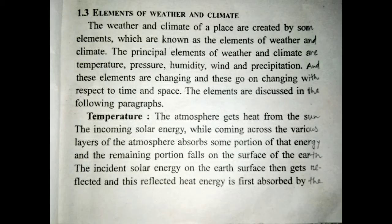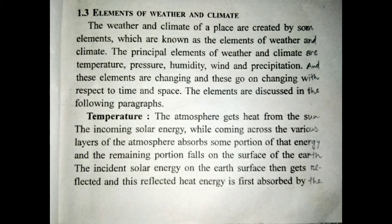The principal elements of weather and climate are temperature, pressure, humidity, wind, and precipitation. These elements go on changing with respect to time and space.